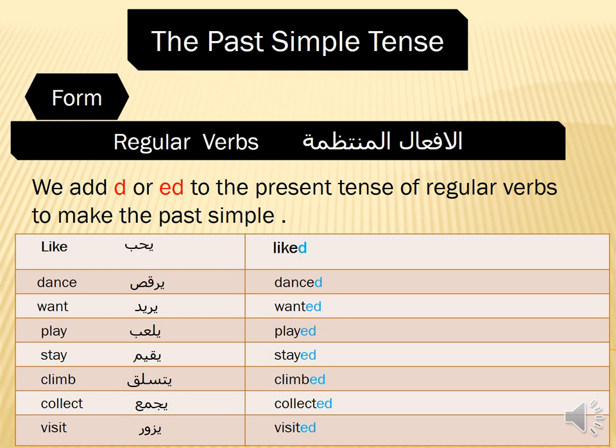For the past simple tense with regular verbs, we add D or ED to the present to get the past. For example: like → liked, dance → danced, want → wanted, play → played, stay → stayed, climb → climbed.